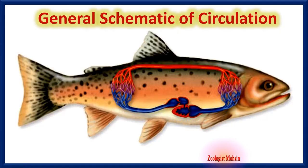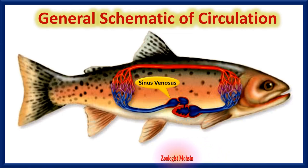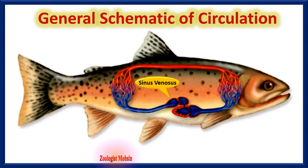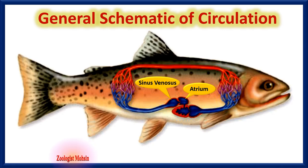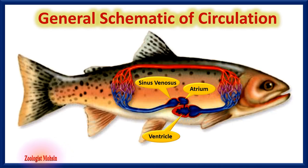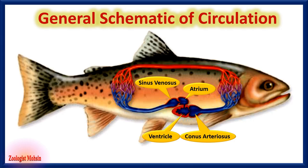This is the general schematic diagram of the circulatory system of bony fish. Major components are: sinus venosus, which collects deoxygenated blood from all parts of the body; the atrium, which receives blood from the sinus and pushes it to the next chamber; and the ventricle, which is also called the heart of fishes, pushing blood to the next chamber — the conus arteriosus or bulbus arteriosus in some fishes.